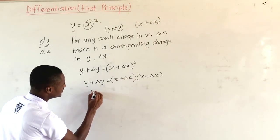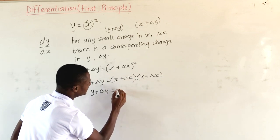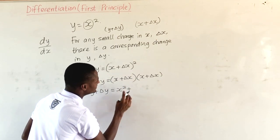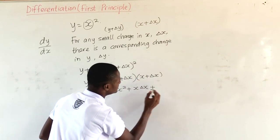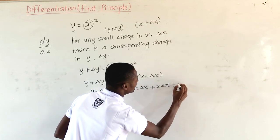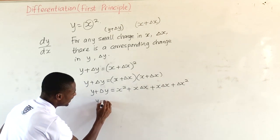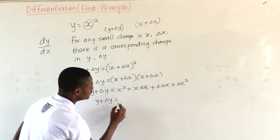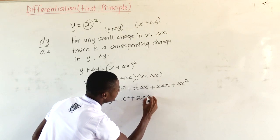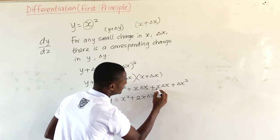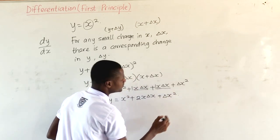That is the expansion. So, y plus our change in y will be equal to, when we expand this, x squared plus x times delta x, plus x times delta x again, plus change in x all squared. This gives us y plus change in y equal to x squared plus 2x delta x plus delta x squared.